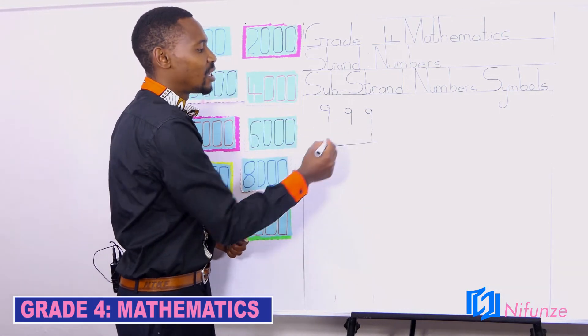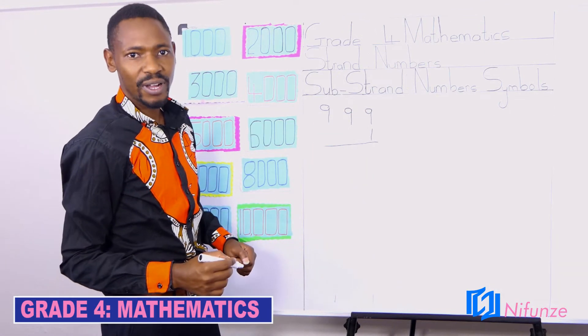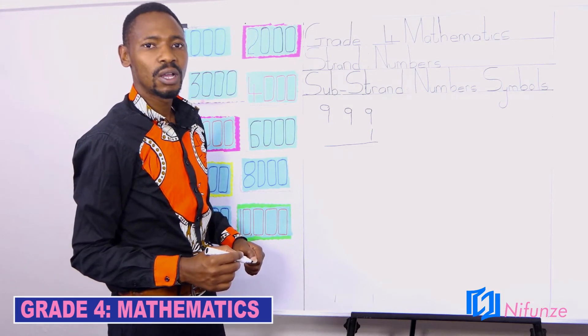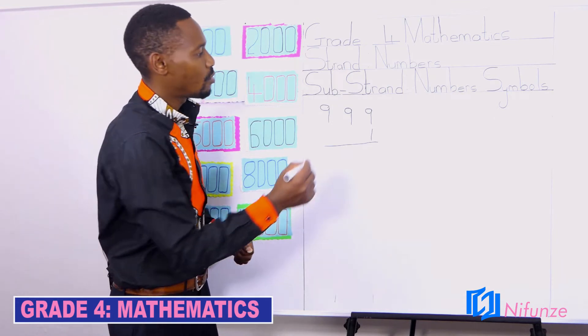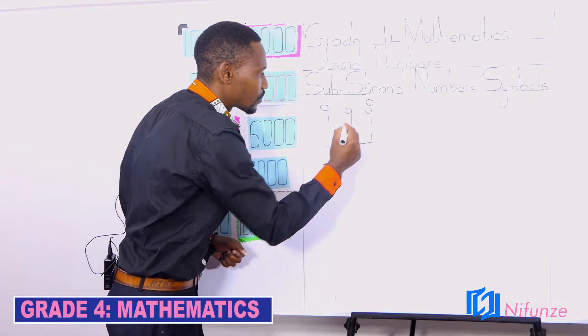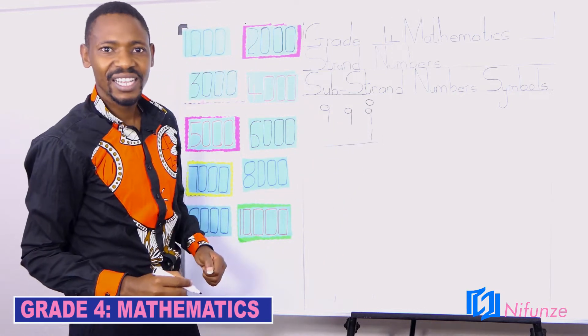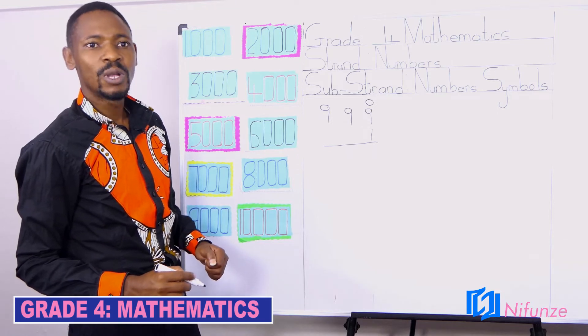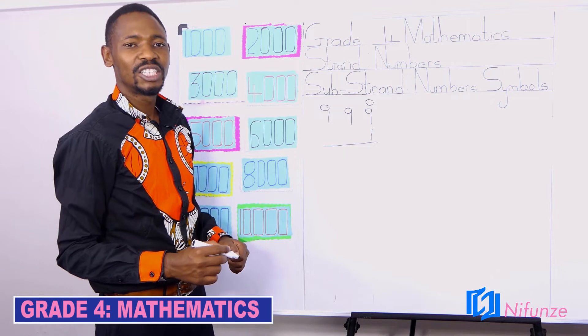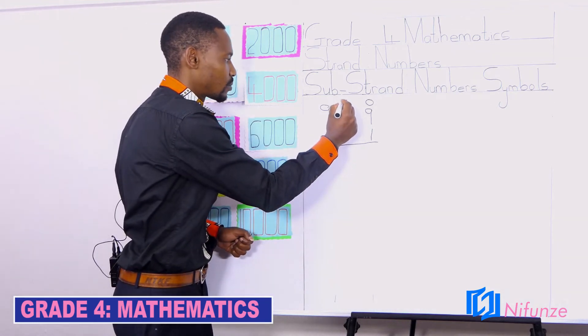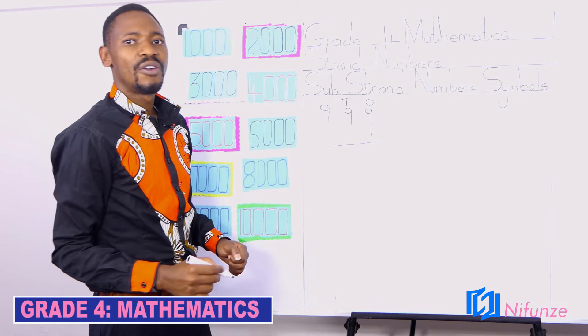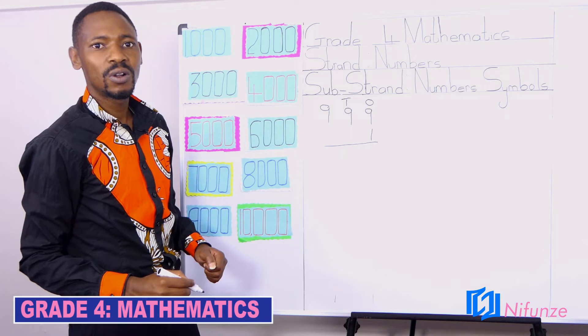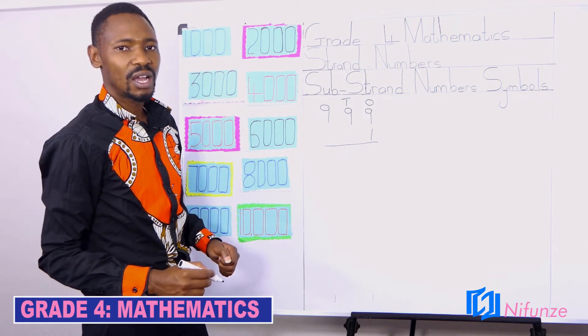The first 9 is in the place value of 1s. We are just going to write O for 1s. The second 9 is 10s. We are only going to write T to represent 10s. The third 9 is 100s. We are going to write H to represent 100s.